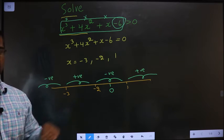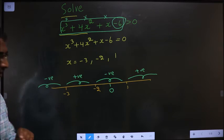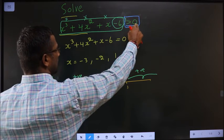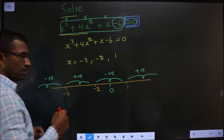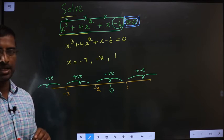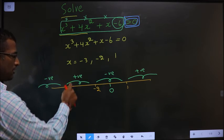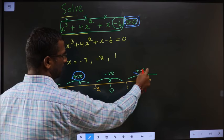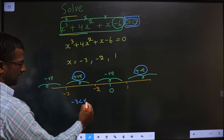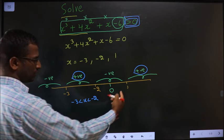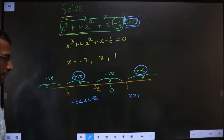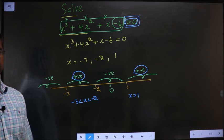Now how do we decide which part is our answer? The inequality is greater than 0, meaning positive values. So the positive parts on the number line are the answer. The positive regions are minus 3 less than x less than minus 2, and x greater than 1. These are the set of values for x satisfying the condition.